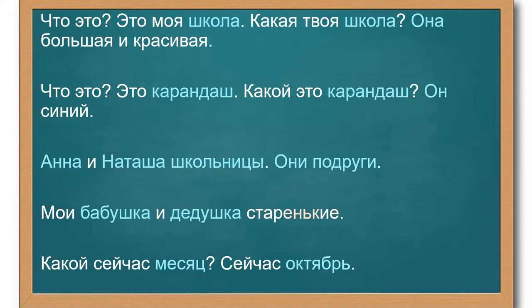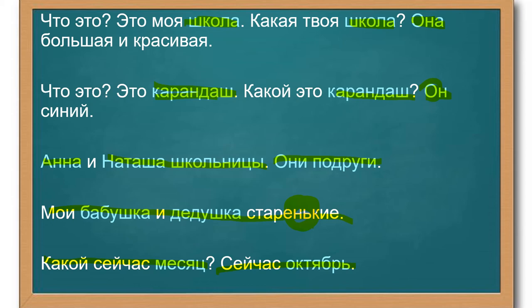Here are some examples. Что это? Это моя школа — школа is nominative case. Какая твоя школа? Also nominative. Она большая и красивая — all this subject is nominative case. Что это? Это карандаш — карандаш is nominative. Какой это карандаш? Он синий — он is nominative case also. Анна и Наташа школьницы — nominative case. Они подруги. Мои бабушка и дедушка старенькие. Какой сейчас месяц? Сейчас октябрь. All these words are nominative case — just a statement or question about something.